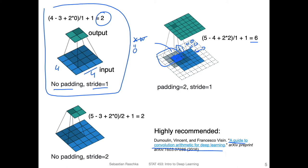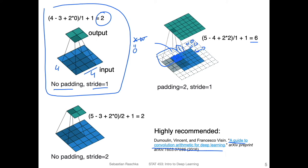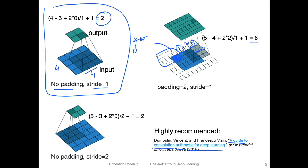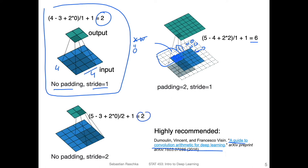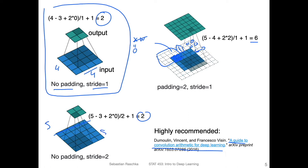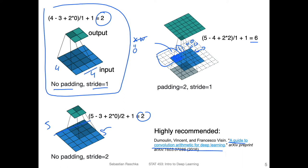In practice, it's more common to use three-by-three or five-by-five kernels. The lower left example shows a stride of two: with a five-by-five input, we get an output of two, illustrating how a stride of two works.